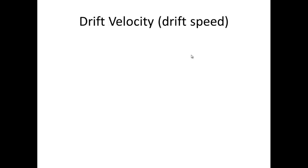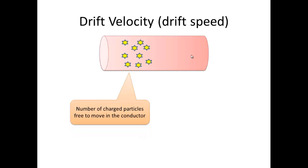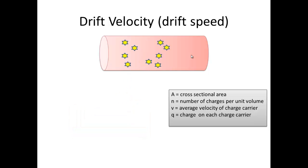We have to look at the drift velocity or drift speed as it's sometimes known. So this is our copper wire and these are our charges, which are basically electrons sitting inside this copper wire, and they're free to move around once we apply the voltage.